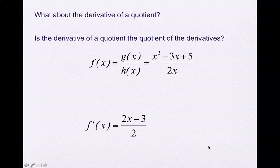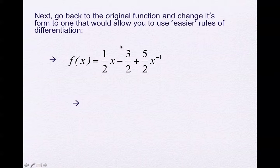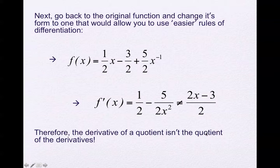So what about the derivative of a quotient? Is the derivative of a quotient the quotient of the derivatives? If we try taking derivatives separately — bringing the 2 down, we get 2x minus 3 on top and x disappears on the bottom — and check it another way by rewriting as (1/2)x minus (5/2)x to the negative 1, we get 1/2 minus 5/(2x squared), which does not equal 2x minus 3. So the derivative of a quotient is not the quotient of the derivatives — that only works with sum and difference.